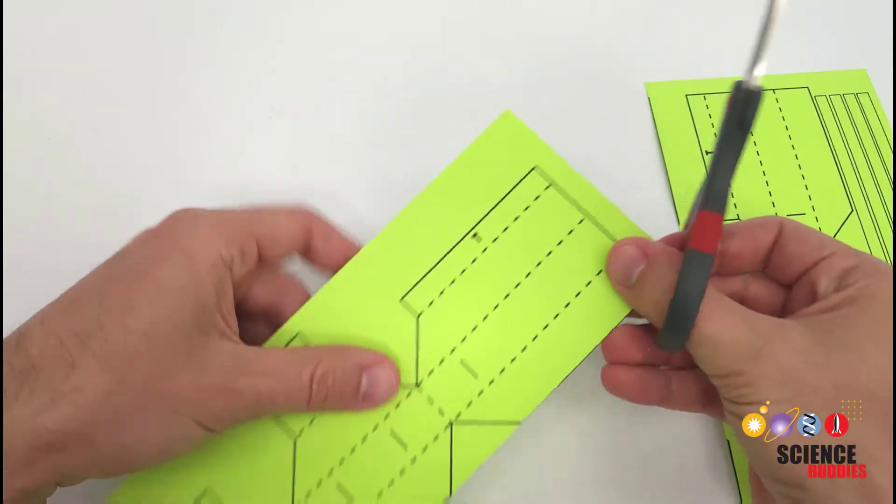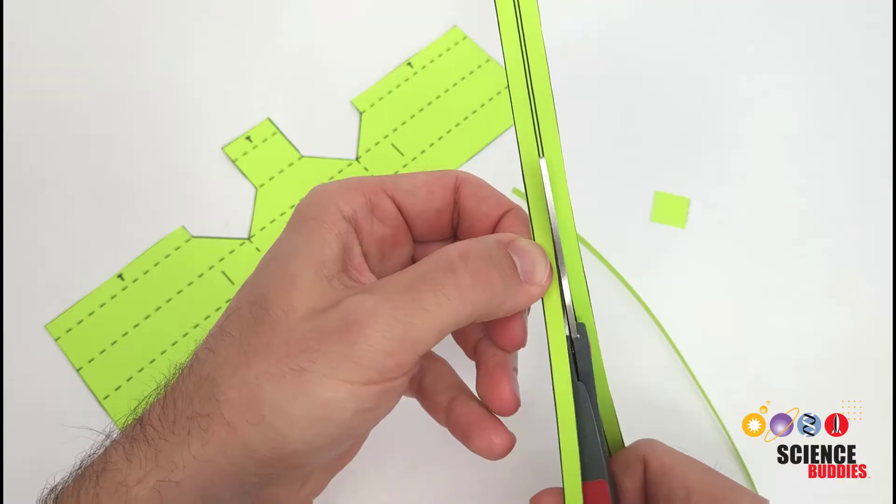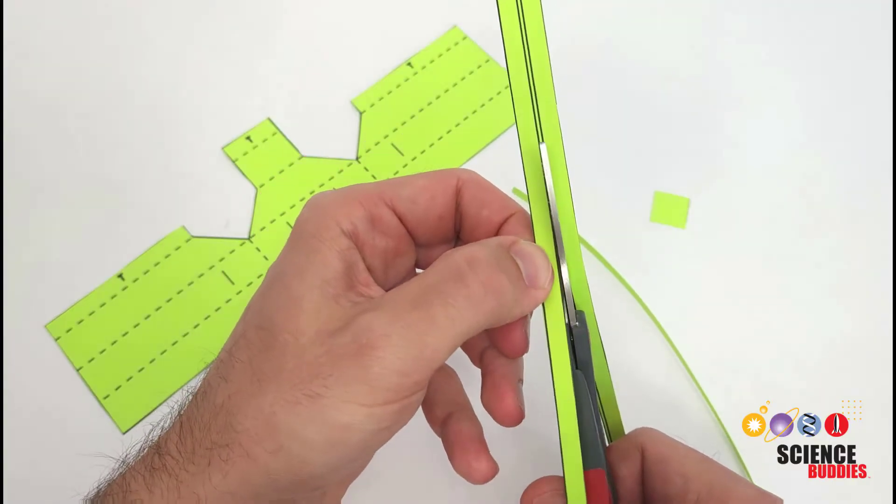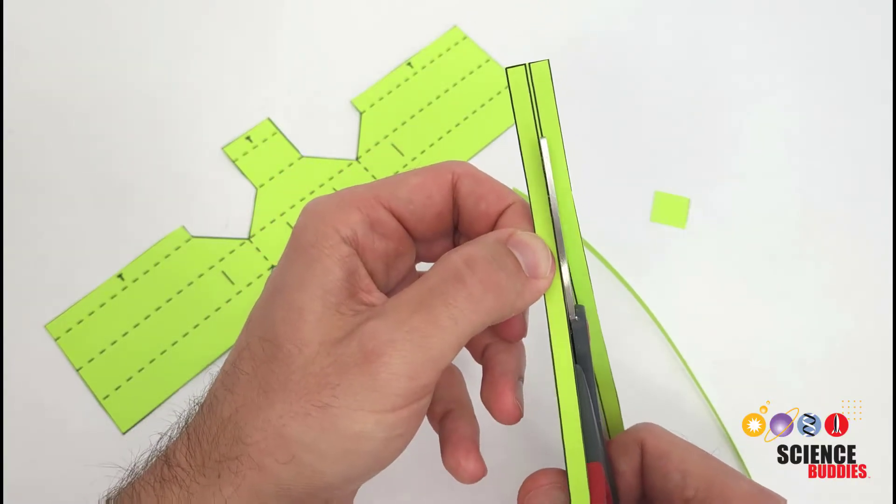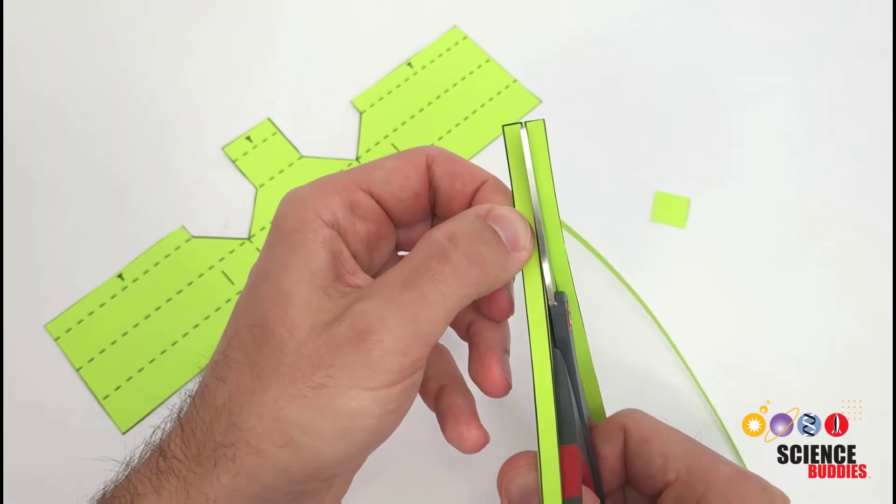Then cut the parts out along the solid lines. Also cut out the tendons or the separate long rectangular strips. You will pull on these to make the gripper close.